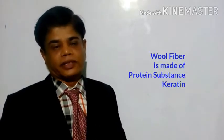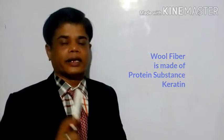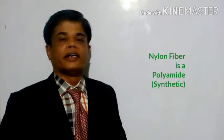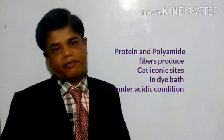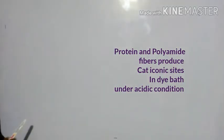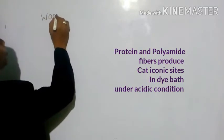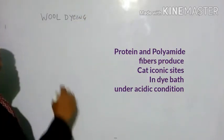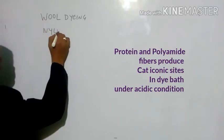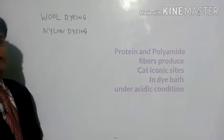Protein fibers — what are the protein fibers? Wool is a protein fiber; its substance is keratin. Polyamide is a nylon fiber, which is a synthetic fiber. The natural textile fiber is wool. So acid dyes are used for wool dyeing and nylon dyeing.